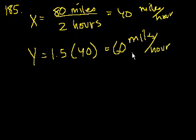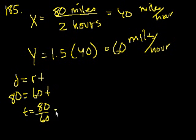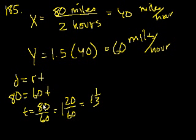How many hours did it take car Y to travel the route? Distance equals rate times time. 80 miles is the distance, the rate is 60 miles an hour, so the time is 80 over 60, which equals 1 and 20 over 60, which equals 1 and 1 third hours.